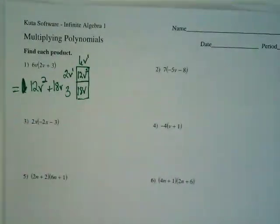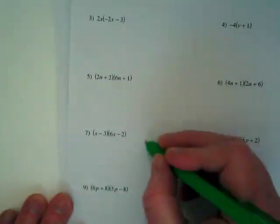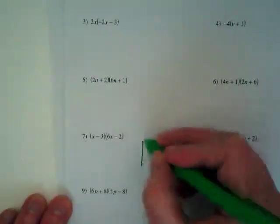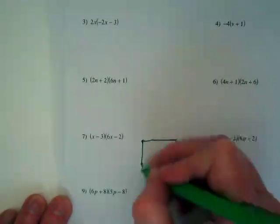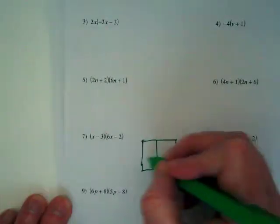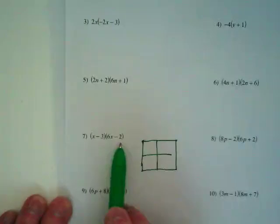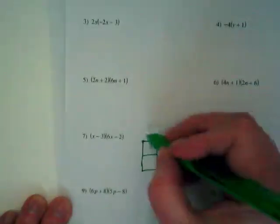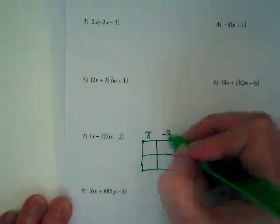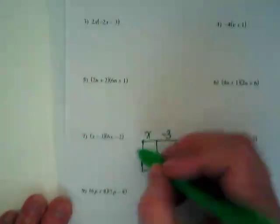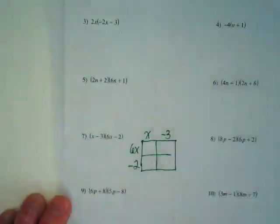I would like to do one that's got more than one term and two terms, so let's skip down to number 7. When I do number 7, I'm going to need to make a box with four spaces inside because I've got a binomial times a binomial. I'm going to put the X here and the negative 3 here. And 6X here and negative 2 here.